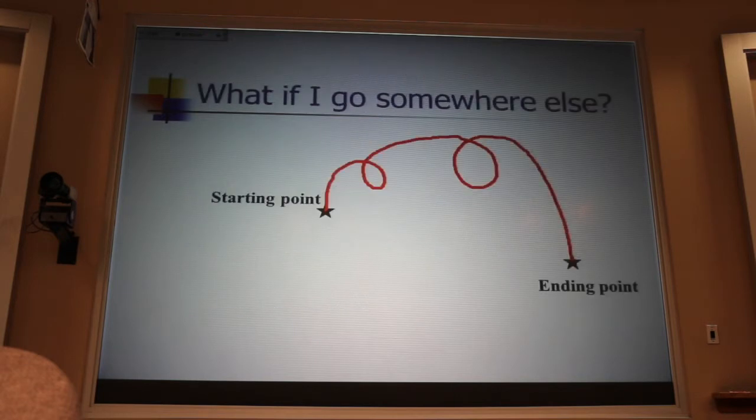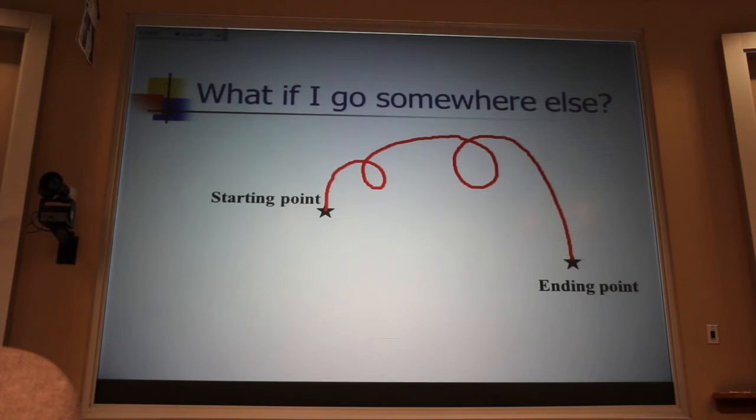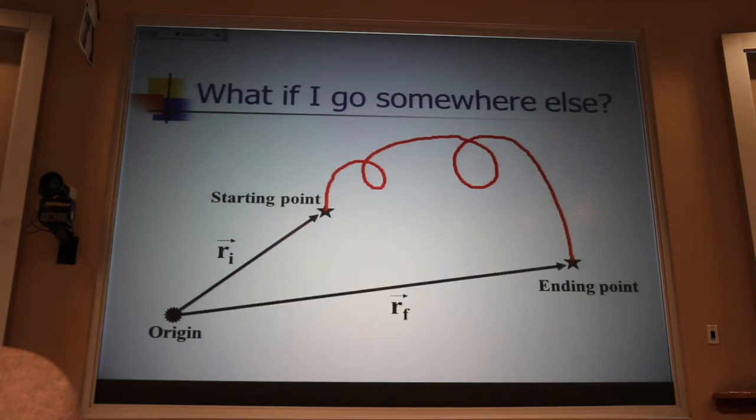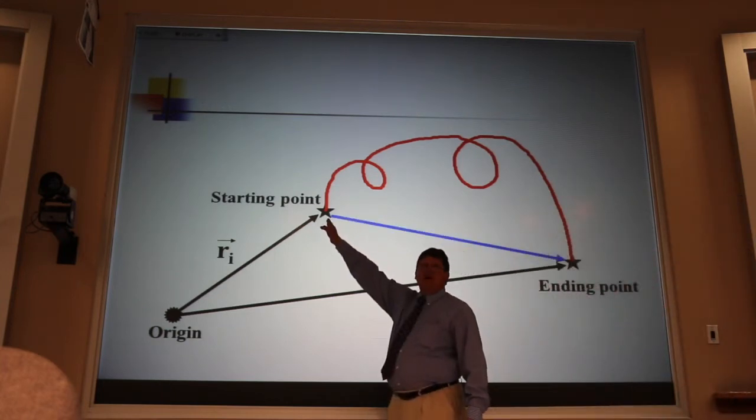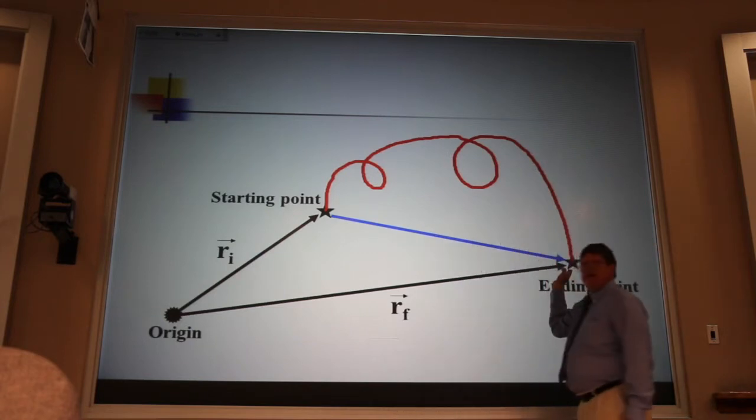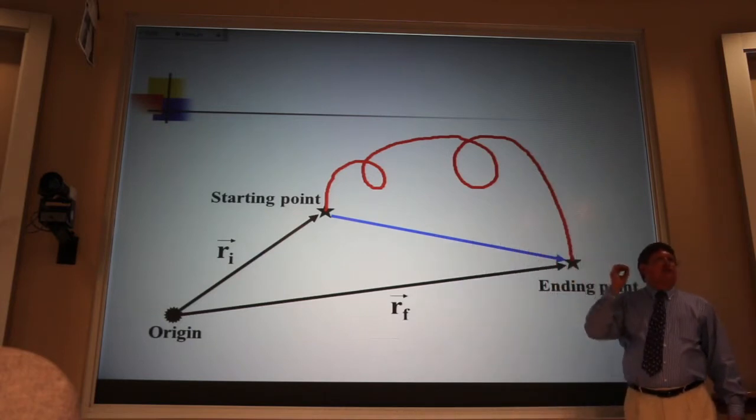Now, what if I go someplace else? Well, to define that going someplace else, we can start with our operational definition of position. And we can define an origin. From that origin, we can define an initial position and a final position. What we're looking to talk about is this vector here. The vector that goes from the starting position to the ending position as the crow flies.